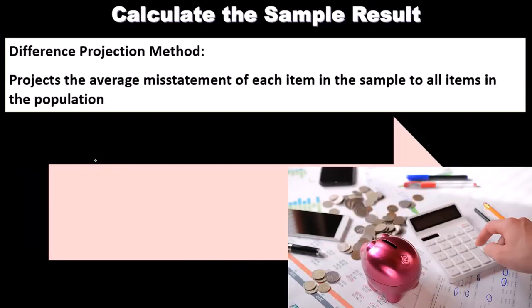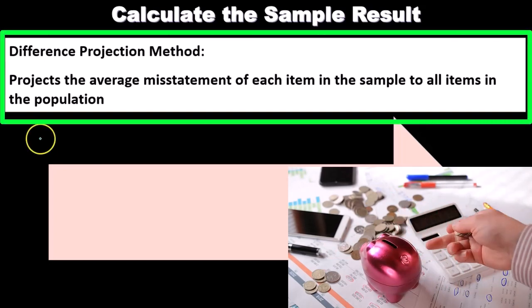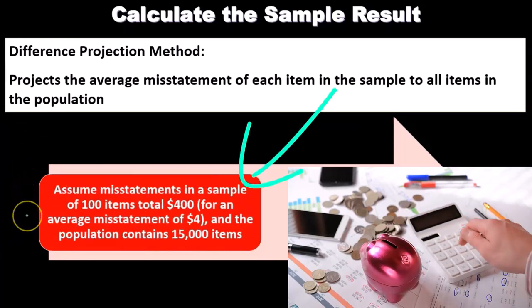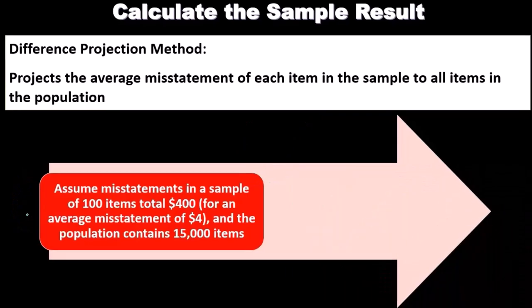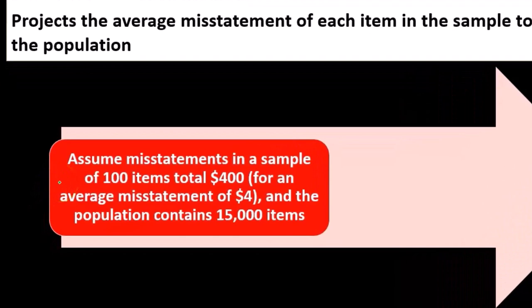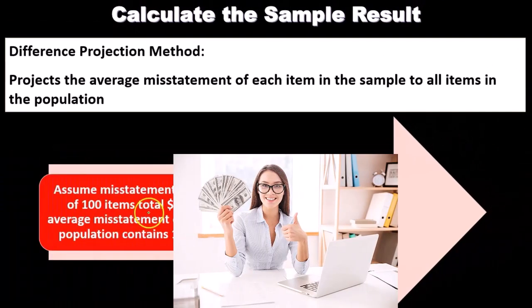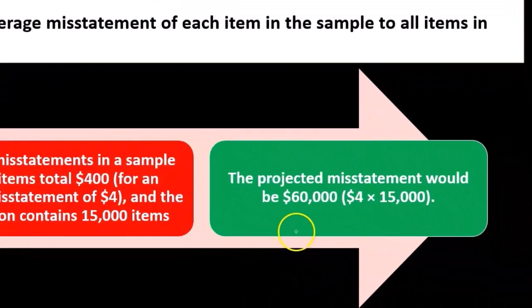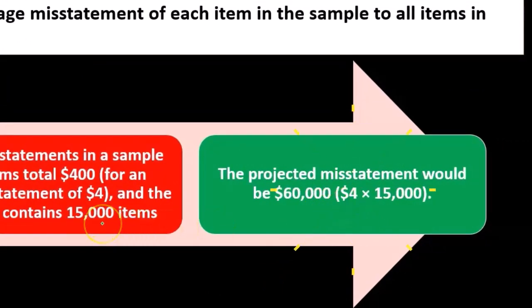The second method is the difference projection method, which projects the average misstatement of each item in the sample to all items in the population. For example, assume the misstatement in a sample of 100 items totals $400, giving an average misstatement of $4 per item. If the population contains 15,000 items, the projected misstatement would be $60,000 — that's $4 times 15,000 items.